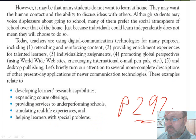From page 292, however, it may be that many students do not want to learn at home. They want human contact and the ability to discuss ideas with others. Although students may voice displeasure about going to school, many of them prefer the social atmosphere of school over that at home. Just because individuals can learn independently does not mean they will choose to do so. We talk about this all the time — what will happen to the college campus if we have this continual rapid movement towards online learning? My opinion is that there will always be a demand for the college experience: people wanting to move at that point in their life, live in groupings with like-minded people, and go through this learning process. Yes, they may learn online, but they'll still need that change.